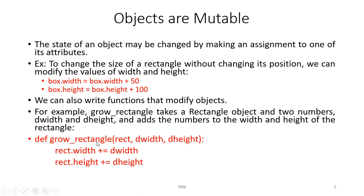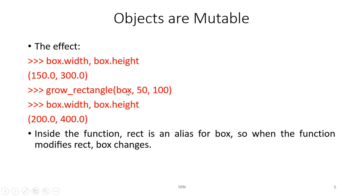We can also write functions to modify objects. The grow_rectangle function takes three arguments: the rectangle object, dwidth, and dheight. It modifies the rectangle by writing rectangle.width += dwidth and rectangle.height += dheight. After invoking it with 50 and 100, box.width becomes 150 and box.height becomes 300. Invoking it again gives 200 and 400. Inside the function, rectangle is an alias for box — it is the same object, so when the function modifies rectangle, box also changes.